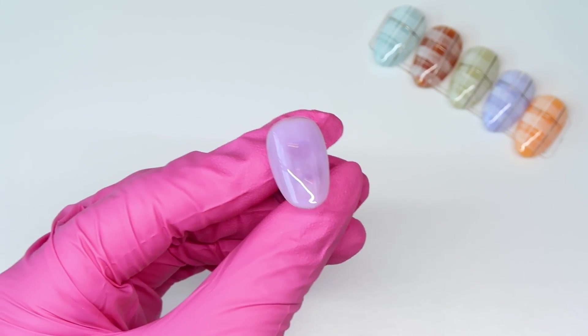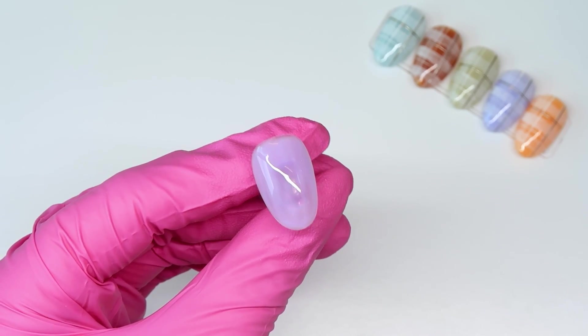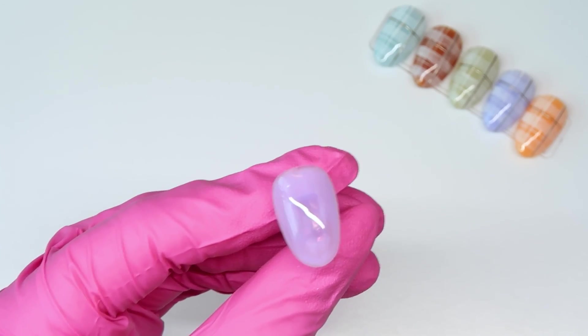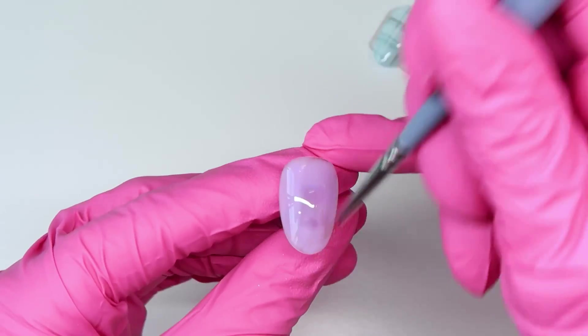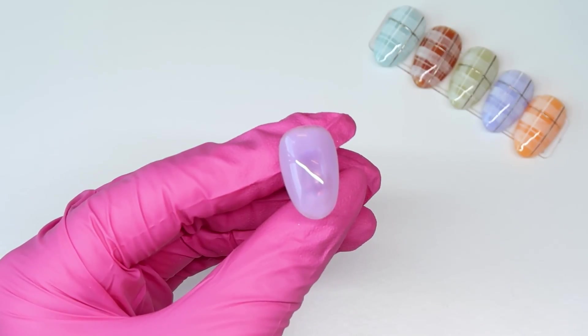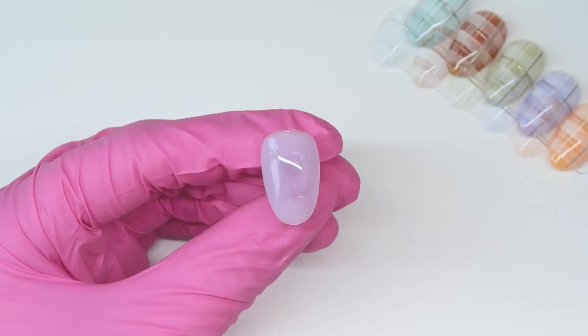So as you can see, it's slightly sheer. You can still see through it a little bit. I'm just going to adjust a little bit of the gel right here that's kind of pulling. I'm going to give this a cure now in my lamp.